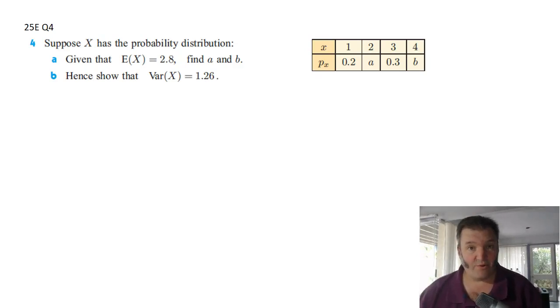All right, good to see so many people got some questions and they're doing a little bit of study before the test. That's always good. This is 25e question 4 and it's a probability distribution question, so the first thing we know is that the sum of the probabilities has to equal 1.